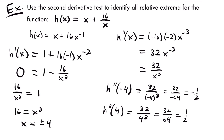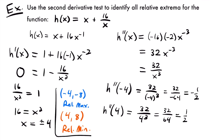To find the full coordinate points: plugging x = -4 into h(x): -4 + 16/(-4) = -4 + (-4) = -8. So our relative maximum is at (-4, -8). Plugging x = 4 into h(x): 4 + 16/4 = 4 + 4 = 8. So our relative minimum is at (4, 8). That's the final answer — a relative max at (-4, -8) and a relative min at (4, 8). We just plugged the critical values into the original function to get their y-coordinates.